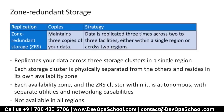In order to have replication across geographical regions also, we call it geo-zone redundant storage — that's a combination of geographical and zone redundant both. Zone-level redundant replicates your data across three storage clusters in a single region. Each storage cluster is physically separated from the others and has its own availability zone.